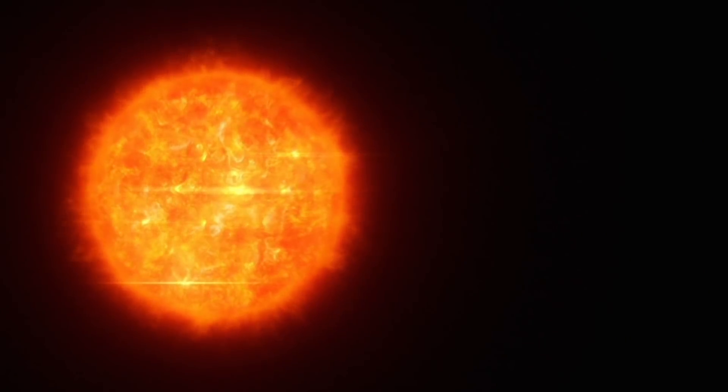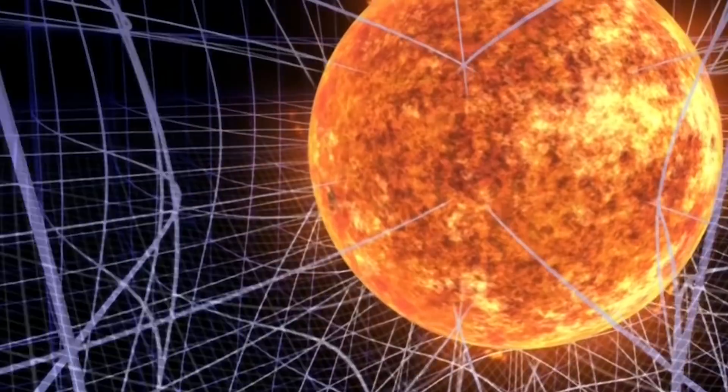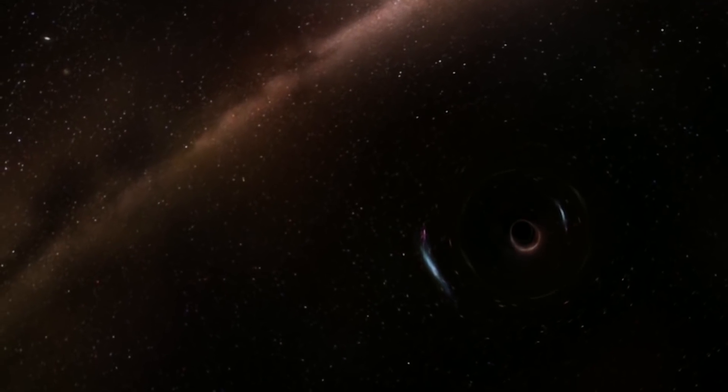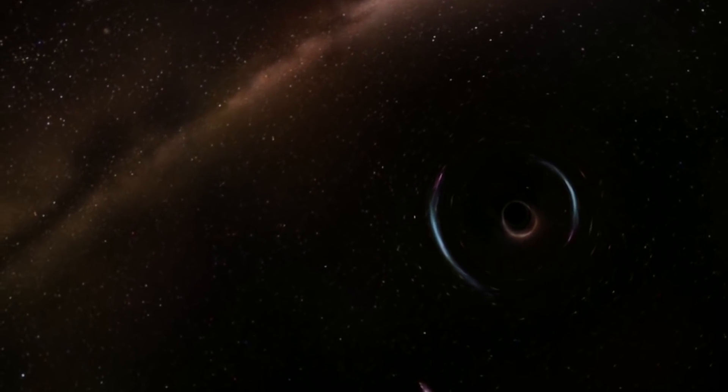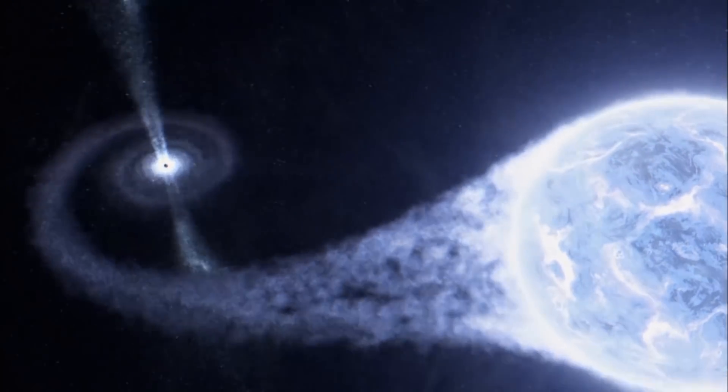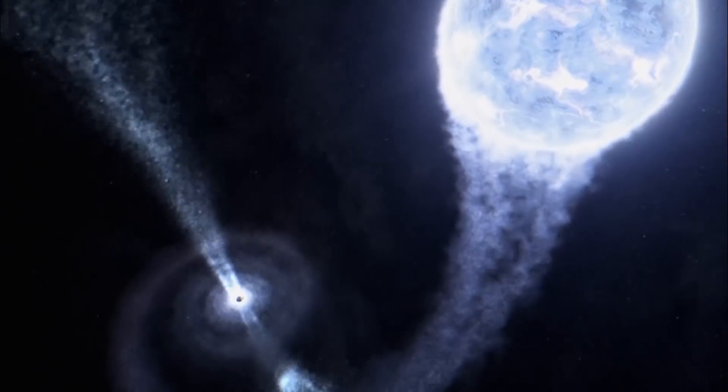Since the Sun is 99.9% of the mass of the solar system, the Sun and the black hole experience a strong gravitational pull towards each other. The black hole would approach the Sun, whose gas is stripped and pulled into the black hole.